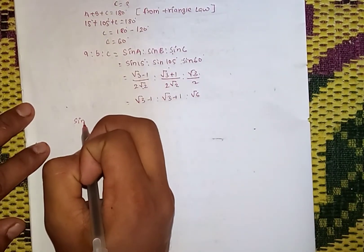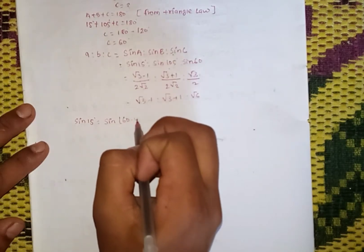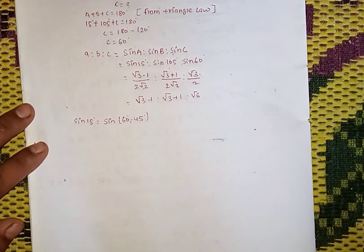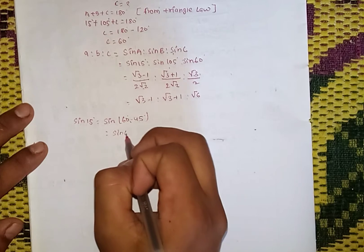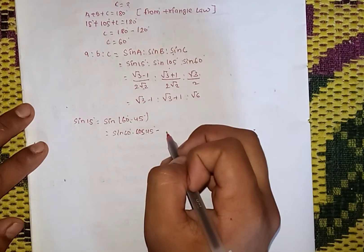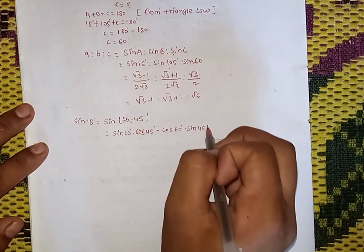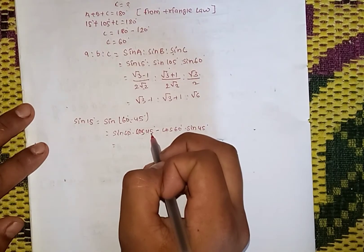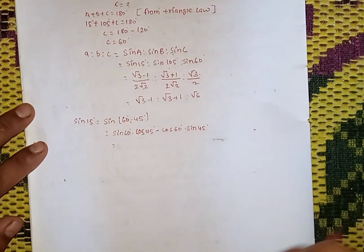Sin 15 degree equals sin(60 minus 45) degree, using the formula sin(A minus B) equals sin A cos B minus cos A sin B. So: sin 60 cos 45 minus cos 60 sin 45.